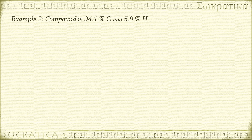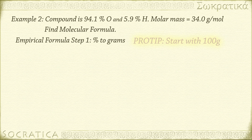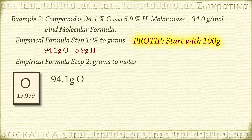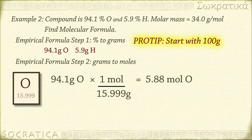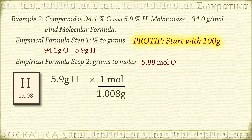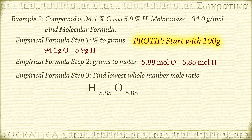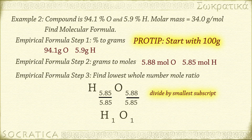Our experimental data tells us the compound is 94.1% oxygen and 5.9% hydrogen, and the molar mass is 34 grams per mole. First, we'll find the empirical formula using only the percent composition data. Assume 100 grams — then we have 94.1 grams of oxygen and 5.9 grams of hydrogen. Converting to moles: for oxygen, 94.1 g × (1 mol / 15.999 g) = 5.88 moles; for hydrogen, 5.9 g × (1 mol / 1.008 g) = 5.85 moles. Dividing through by the lowest number, 5.85, we get H1O1, or simply HO as the empirical formula.